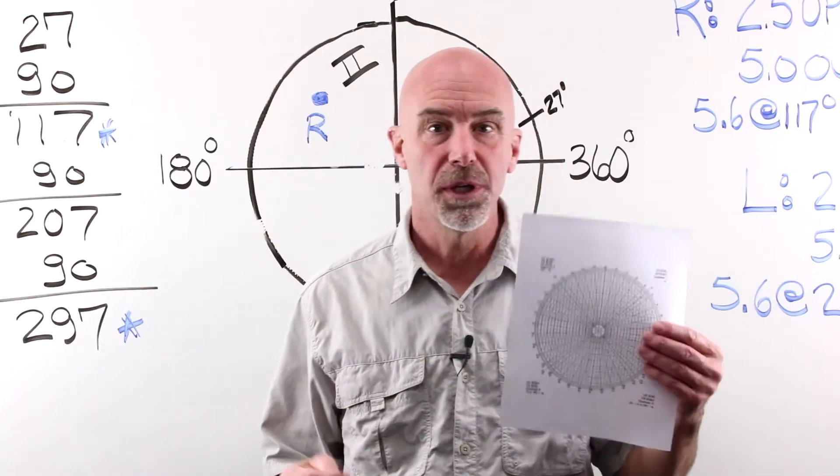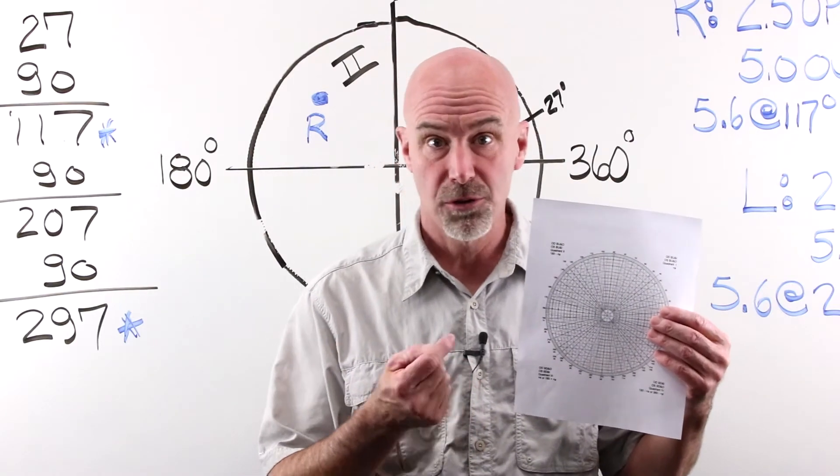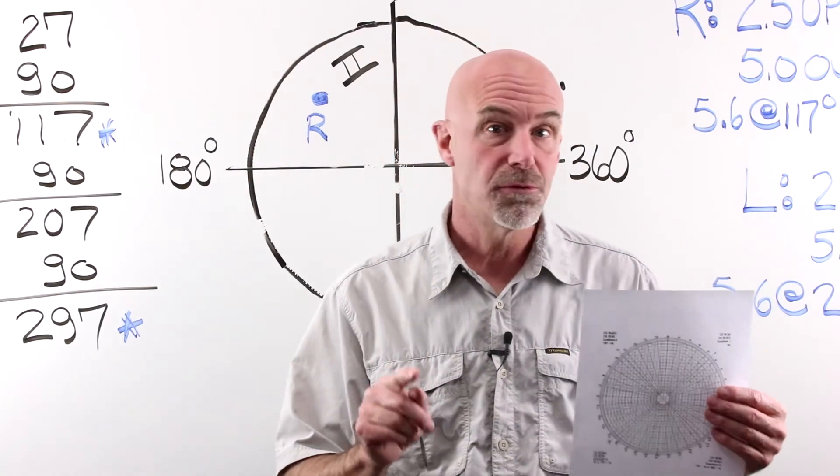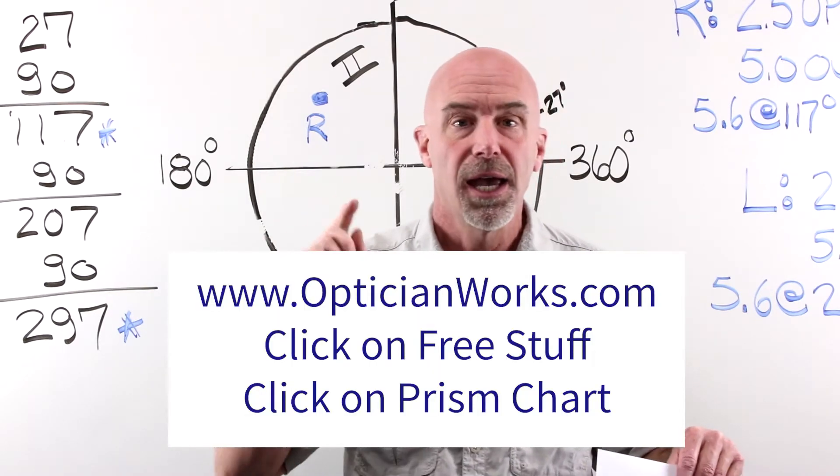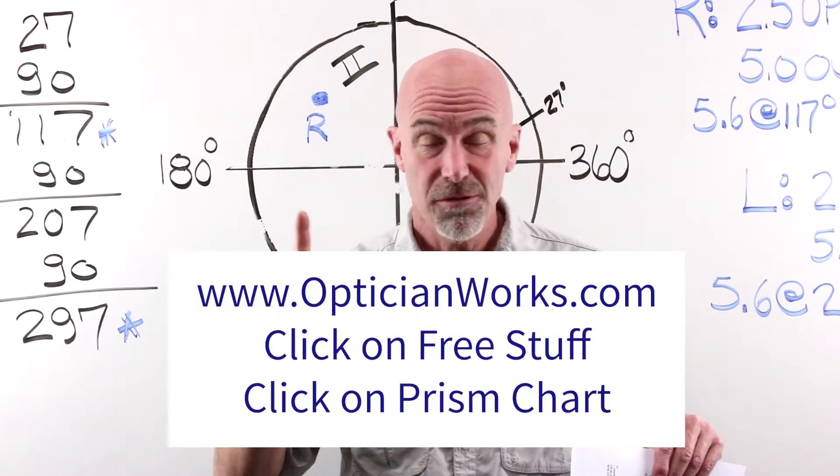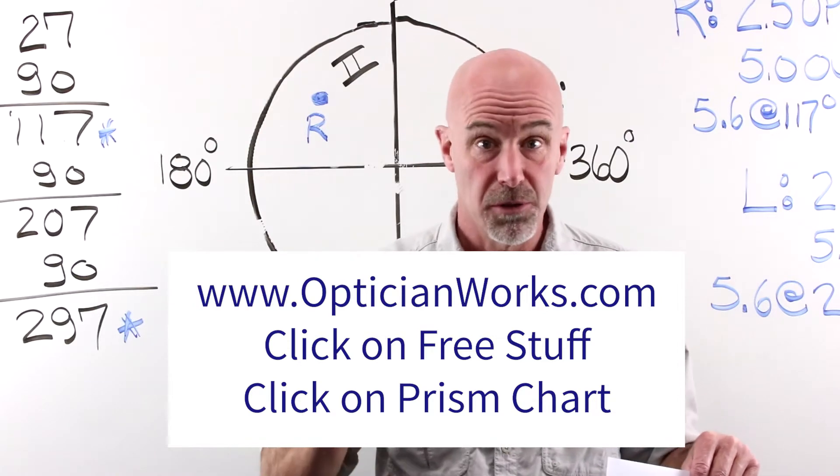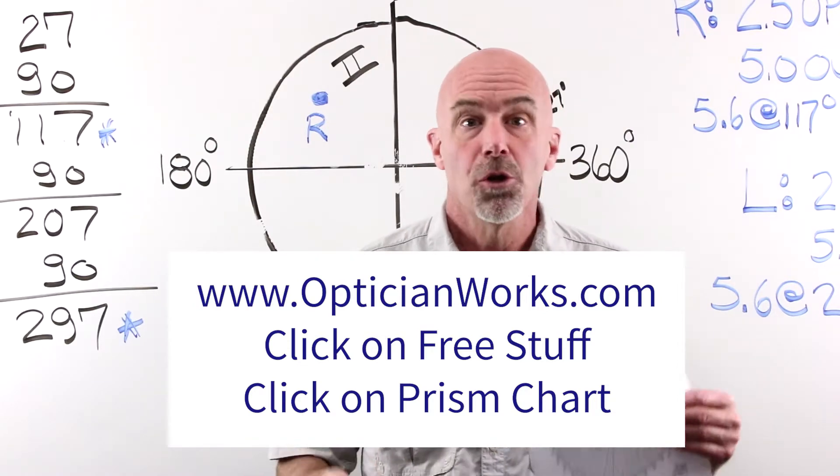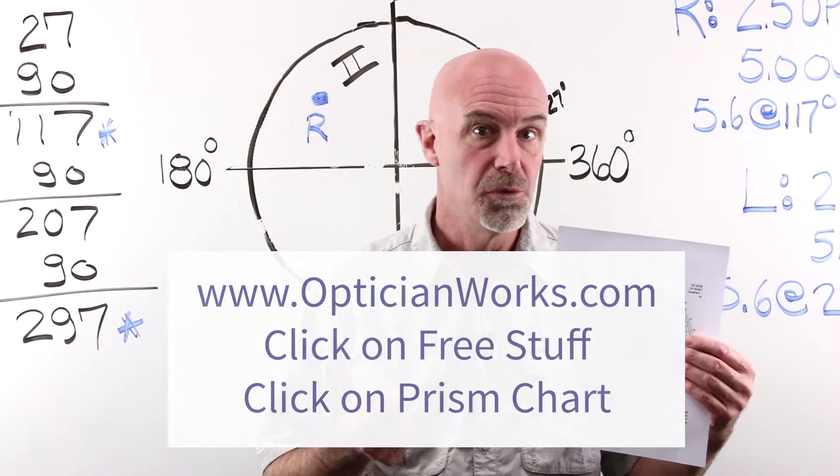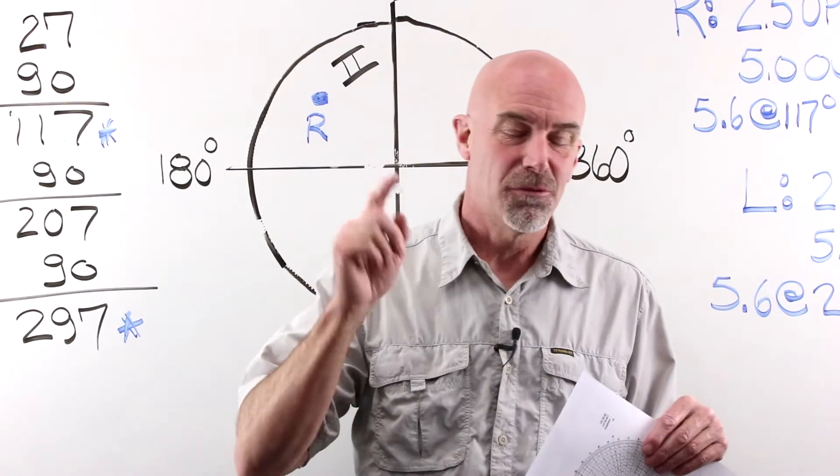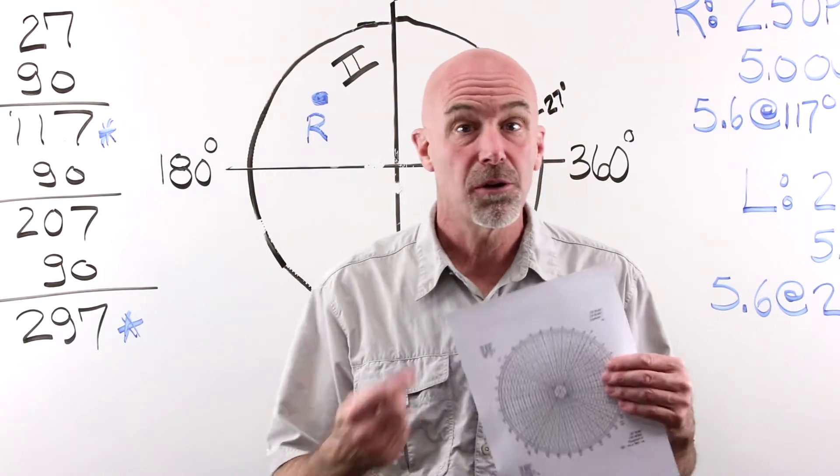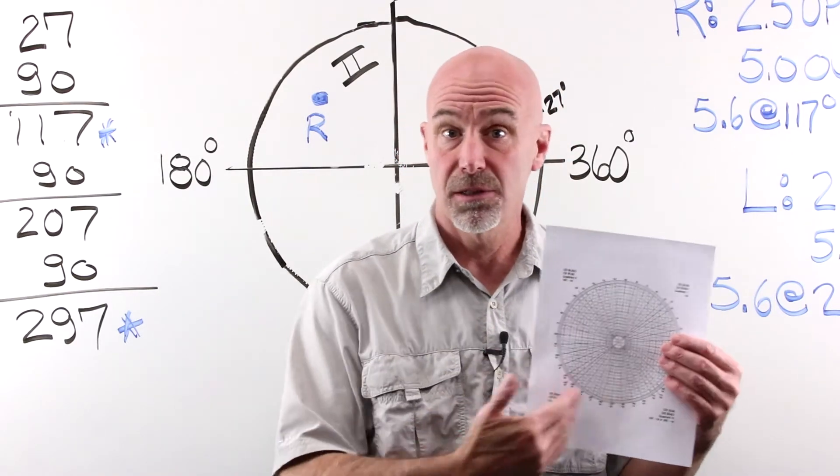It will probably help you if you have a printout of this chart. We've provided one for you. Just go to the OpticianWorks website. There is the address. And click on free stuff. Then scroll down to the bottom and you'll see prism chart. You can also use these charts to do this by hand. But that's another video for another day. But for today, I would go ahead and print this out because it will help you visualize and see the quadrants.